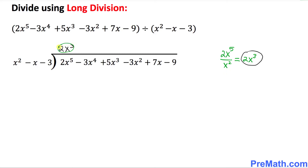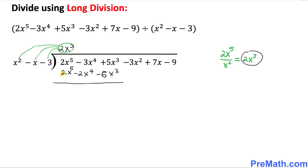In the next step, we multiply 2x³ by all three terms of the divisor. That gives us 2x⁵ minus 2x⁴ minus 6x³. Now we change the sign: positive becomes negative, negative becomes positive. This cancels out the leading term, and we end up with negative x⁴ plus 11x³.